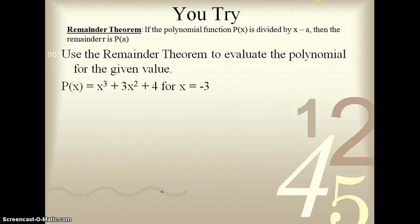So, here's the You-try for this one. So, you have p of x is equal to x cubed plus 3x squared plus 4, and then you're going to use the remainder theorem to evaluate this for x is equal to a negative 3. Just a small hint, you are actually missing a term in this example.